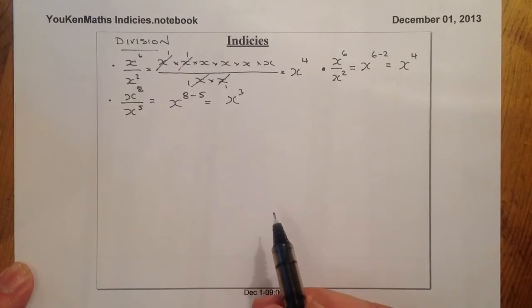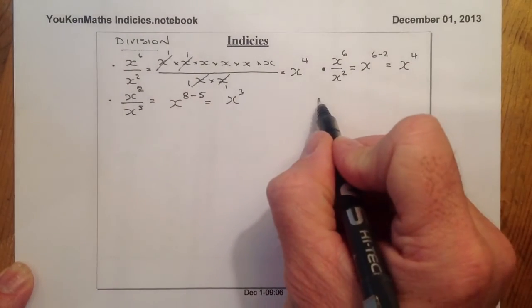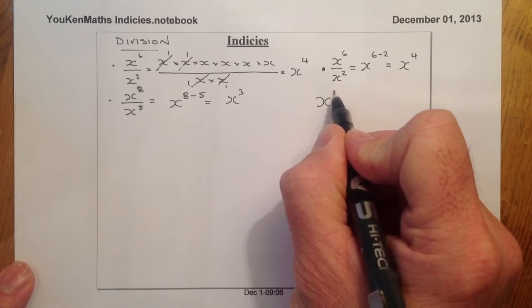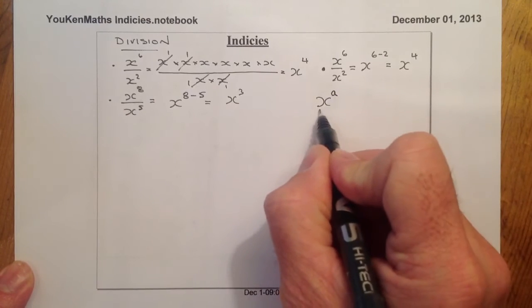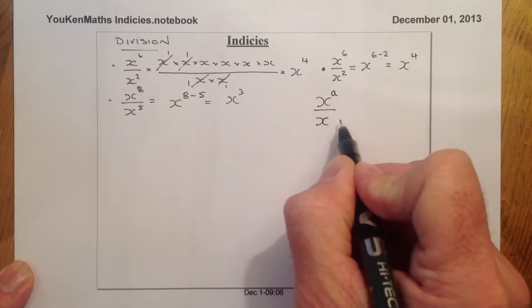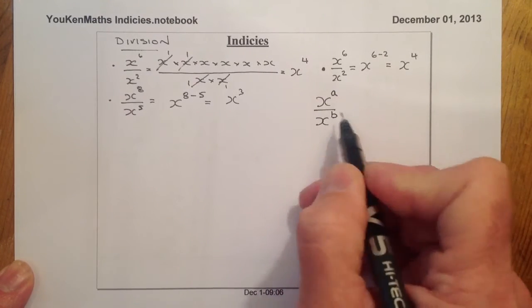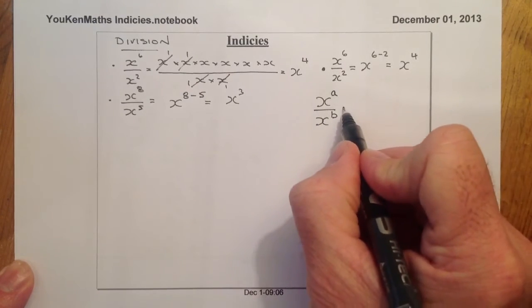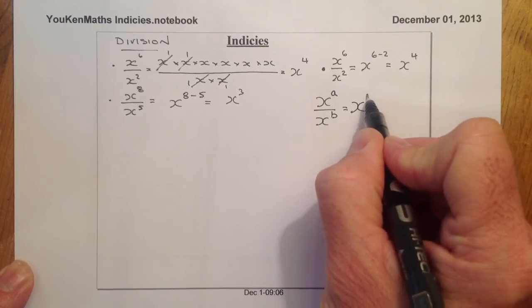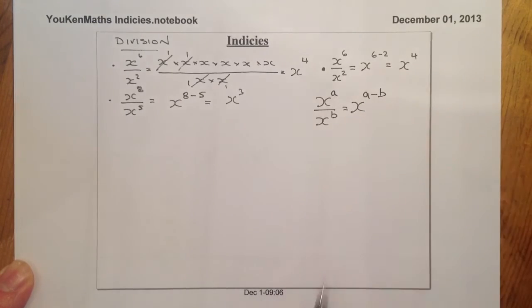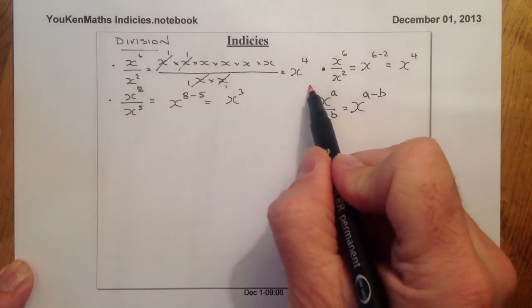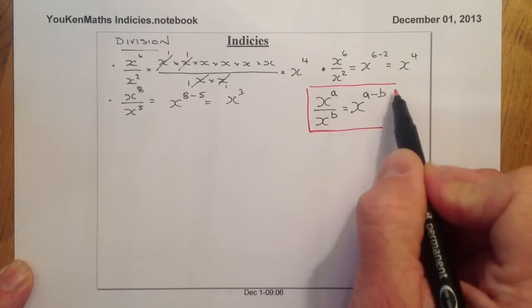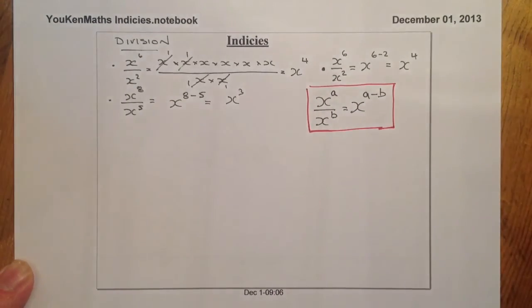So the rule I can see here is: if I have x to the power of a divided by x to the power of b — where the bases are the same — I simply subtract the indices. That is the key rule to become accustomed to, especially for division of indices.